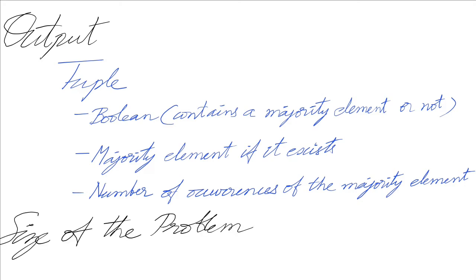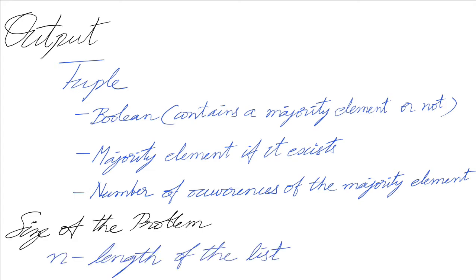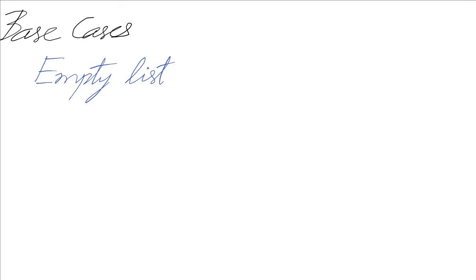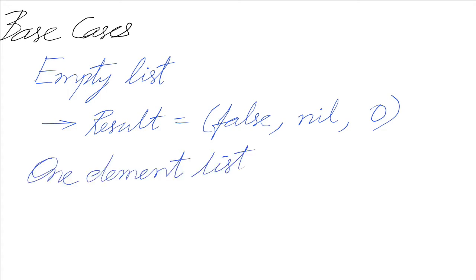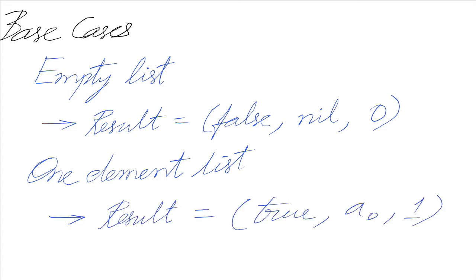What is the size of the problem? The size of the problem is n, the length of the list. So what are the base cases? An empty list is a base case — we return a tuple consisting of false, nil, and zero. A one-element list is also a base case. In this case, we return true and whatever that one element is as the second element of the tuple, and the number of occurrences is one.